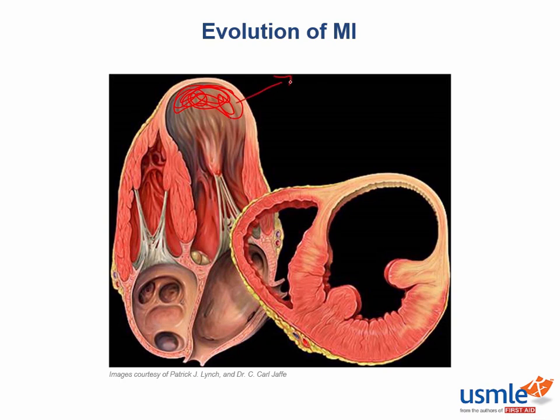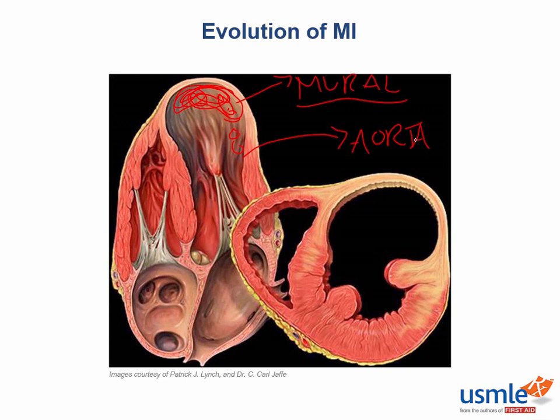Blood can pool and form a clot in this hypokinetic segment — called a mural thrombus because it literally forms on the wall. Having a large clot in the left ventricular chamber is a serious problem because pieces can break off, get sent into the aorta, and embolize, throwing blood clots throughout the body.